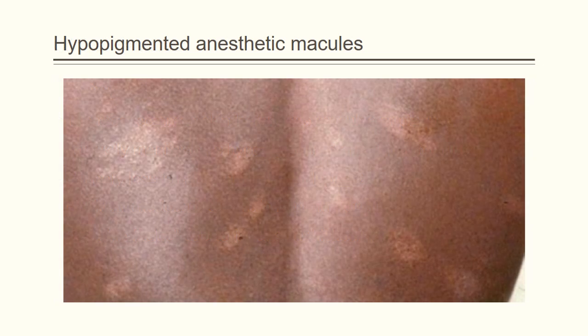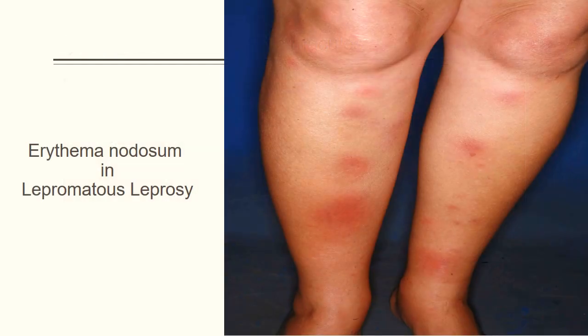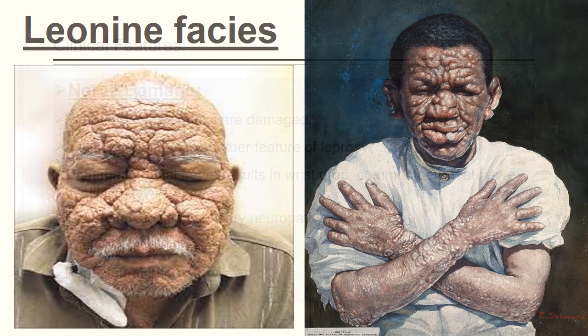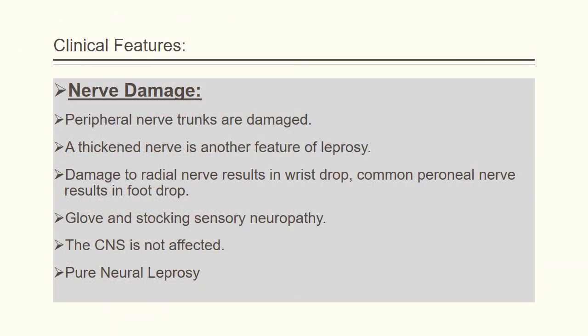In this picture you can see hypopigmented lesions — the patient will not feel anything on these lesions, which is why they are called anesthetic macules. This is a picture of erythema nodosum showing red, circular lesions. These pictures show leonine facies, which occur due to thickening of the skin. Peripheral nerve trunks are damaged, resulting in thickened nerves.